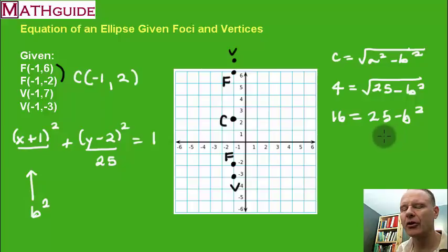Now don't do a lot of math here. Just think, 25 minus some value is equal to 16. 25 minus 9 is equal to 16. That number right there has got to be 9. Therefore b squared is 9 and that's the number that goes right there.